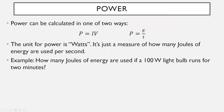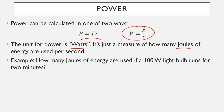Power can be calculated in one of two ways: P = IV, meaning power equals current times voltage, or P = E/t, meaning power equals energy divided by time. The second formula is generally easier to work with, but be prepared to use both. The unit for power is watts — never forget to list your units. A watt is a measure of how many joules of energy are used per second, so a watt is really a joule per second.